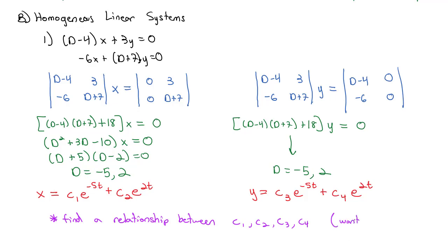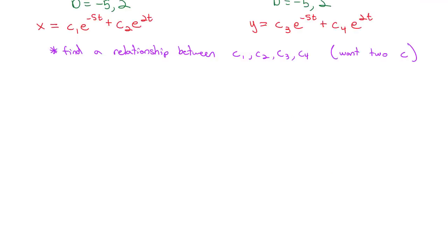We only want two constants. It's most common to express everything using c1 and c2. To find the relationships, we go back to one of the original equations — x prime minus 4x plus 3y equals zero — and substitute our solutions. It doesn't matter which equation we choose. By substituting the expressions we found for x, x prime, and y, we can find the relationship between the constants.